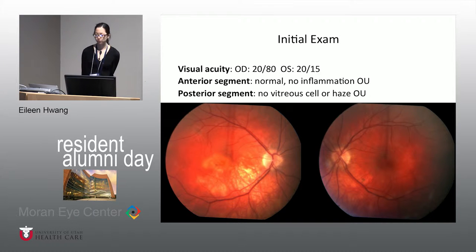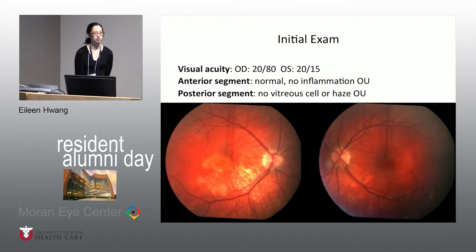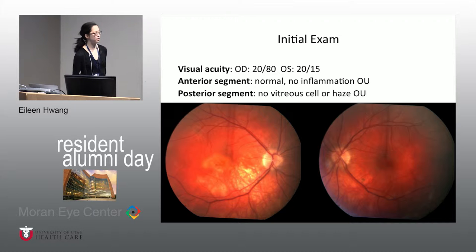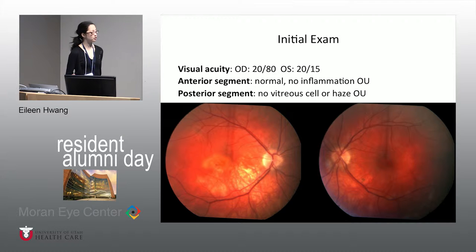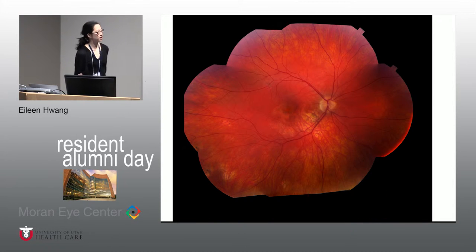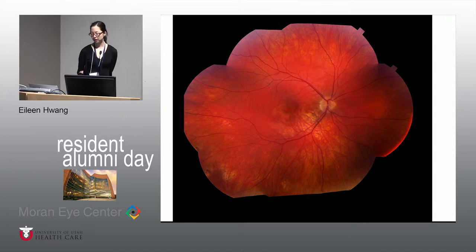On her initial exam, her visual acuity was 20/80 in the right and 20/15 in the left. Her anterior segment exam was unremarkable without inflammation. In her posterior segment, she didn't have any vitreous cell or haze, but she did have lesions in her posterior pole. The optic nerves and vessels are normal, but there are well-demarcated areas of RPE atrophy, as well as in the central macula of the right eye, a yellowish placoid lesion with indistinct borders likely responsible for her visual symptoms. There were also lesions in the periphery that were atrophic as well as hyperpigmented.